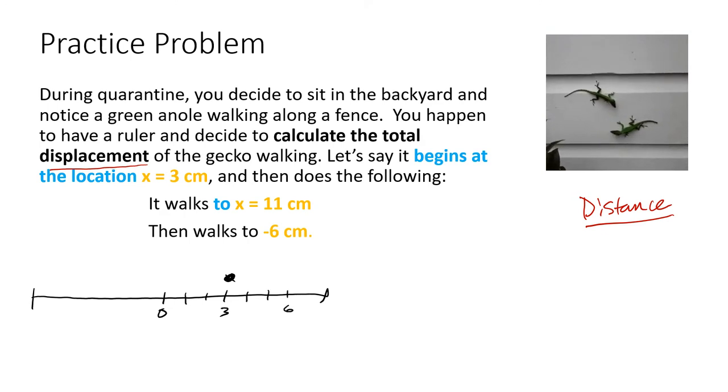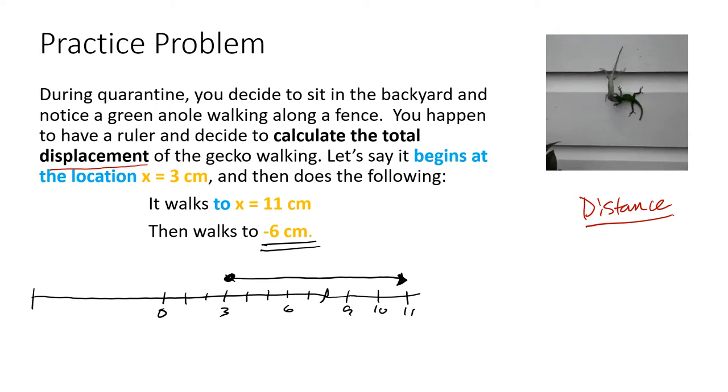And then it walks to x equals 11. So 4, 5, 6, 7, 8, 9, 10, 11. And it walks to negative 6 centimeters. So it's walking all the way over there. So that means that it is going from negative 1, 2, 3, 4, 5, oh look at this, negative 6. So from here, it goes all the way back to negative 6. This is where it stops.